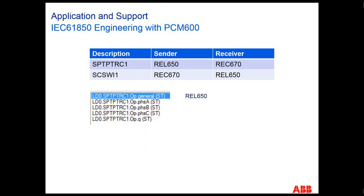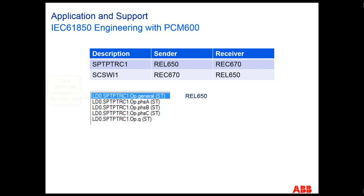These are the datasets that are going to be contained on the GOOSE message coming from the REL650 relay. We have a general operation, which is the equivalent of having any of the three-phase tripping — phase A, phase B, phase C — and the quality of the logical node.